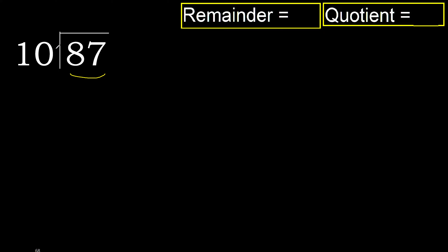With 87, 10 multiplied by which number is nearest to 87 but not greater? 10 multiplied by 9 is 90 — 90 is greater. 10 multiplied by 8 is 80 — 80 is not greater.